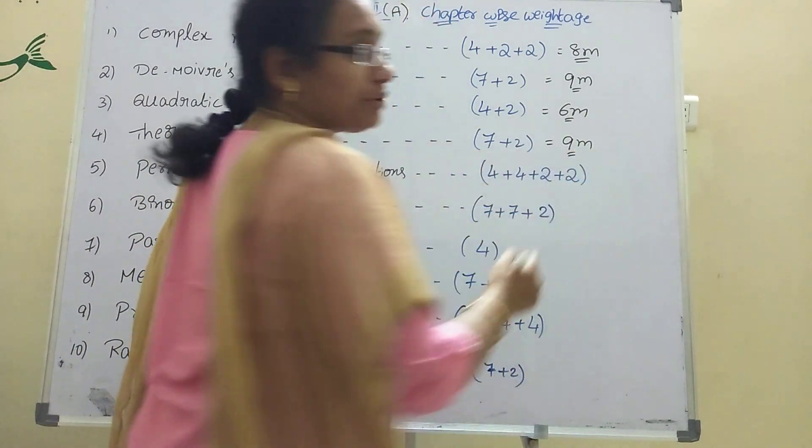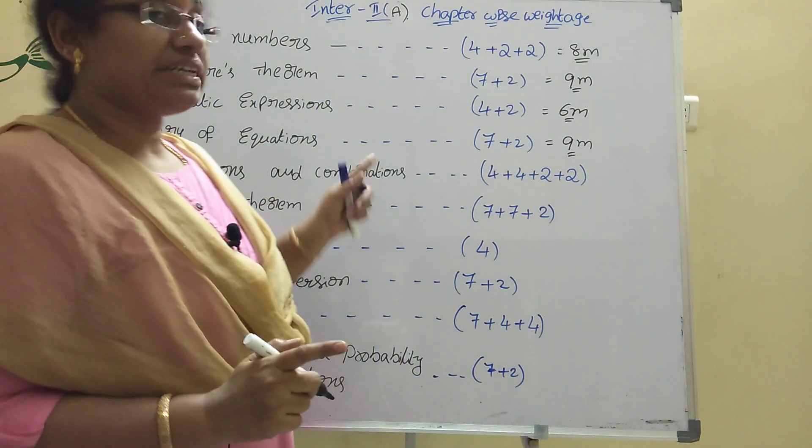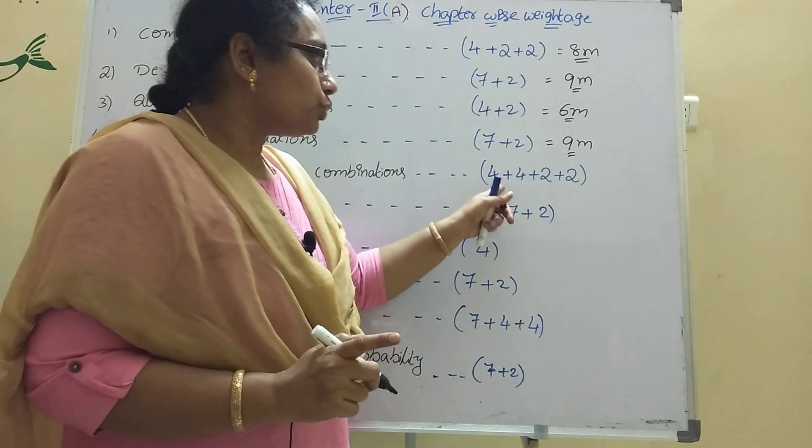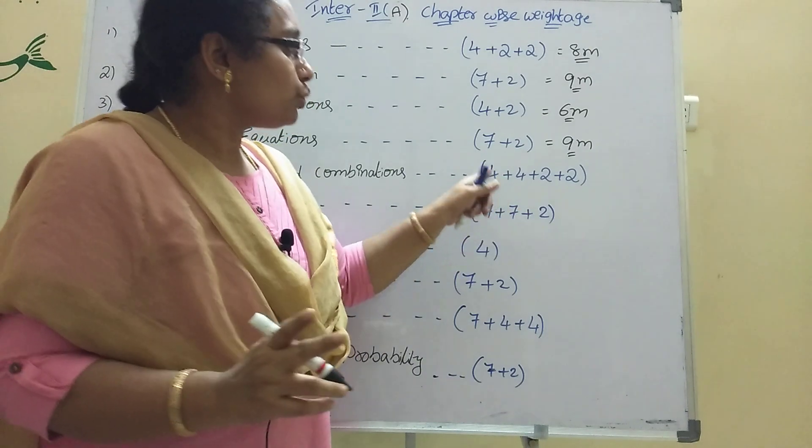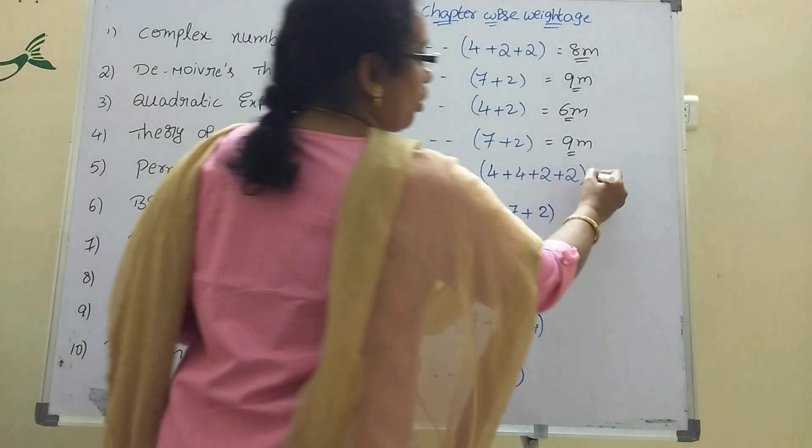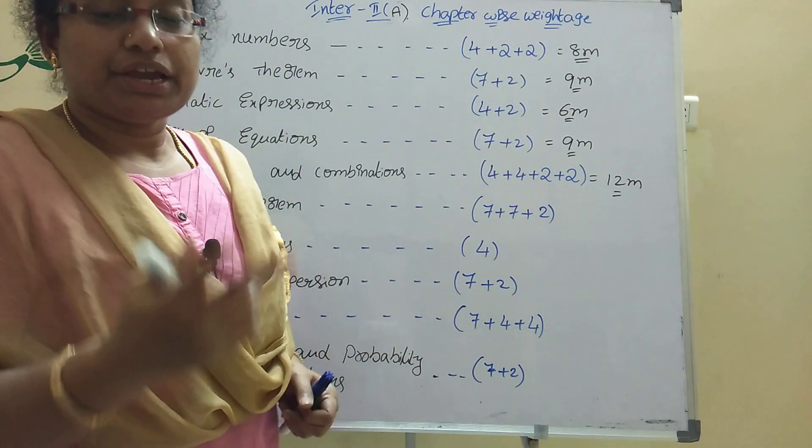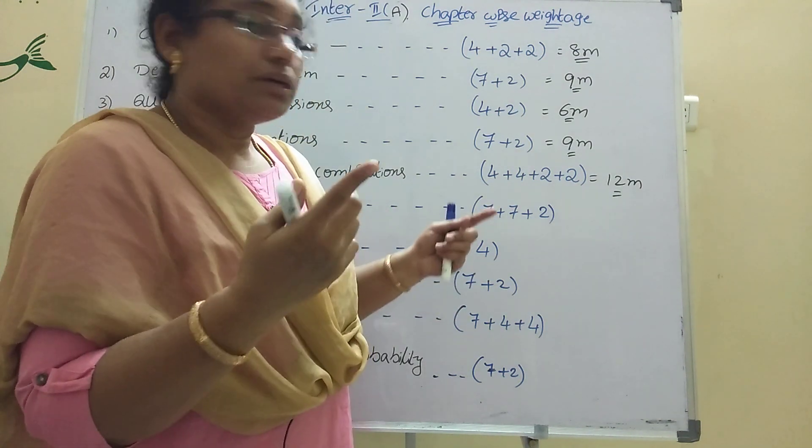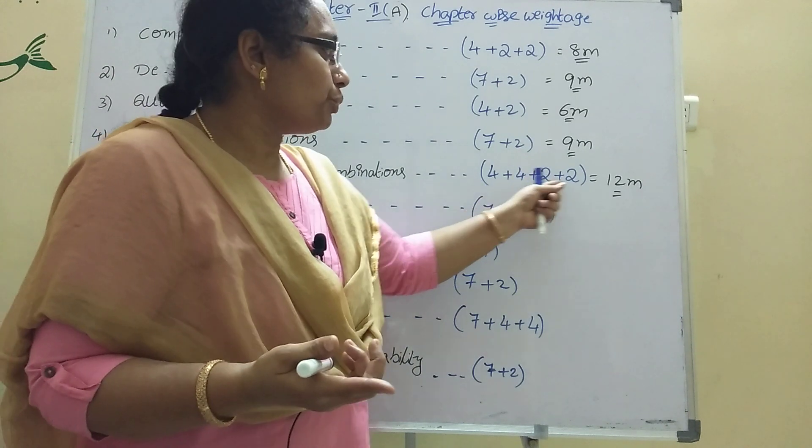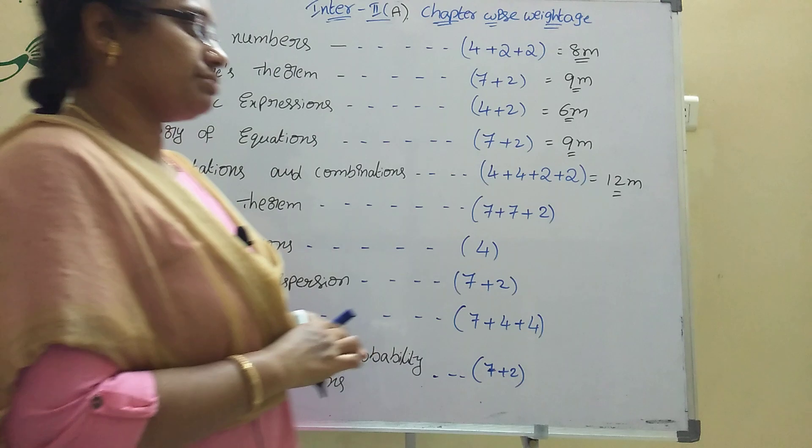Permutations and combinations: no 7-mark will be there. Two 4-marks and two 2-marks: 8 plus 4 is 12 marks total. One 4-mark will be rank problems, another model. Two 2-mark problems like NCR equal to NCR, selected models will be asked.